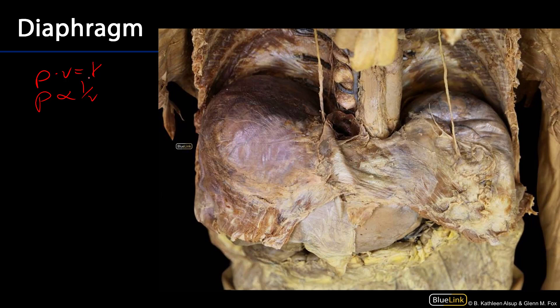So whatever the muscles can do to act upon the volume of the thoracic cavity, they can affect pressure and therefore affect ventilation. The major muscle involved in the movement of air in and out of the lungs — the process of ventilation — is the diaphragm. We can see the diaphragm here sitting between the thoracic cavity and the abdominal pelvic cavity. As the diaphragm contracts, it's displaced inferiorly, increasing the volume and decreasing the pressure within the thoracic cavity for inhalation.